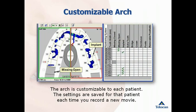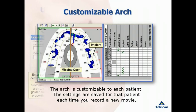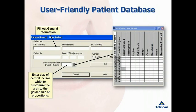The T-Scan gives you the ability to customize the dental arch in the software before each individual patient. You can indicate missing open, missing closed, crowns, implants, and more. This can be done either before or after taking a recording of your patient's bite. The T-Scan includes a patient database, with bridges available for many of the practice management systems on the market today. It is easy to network the T-Scan system to use in multiple operatories.